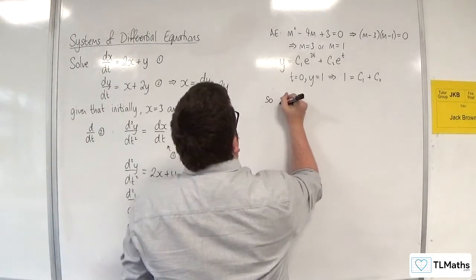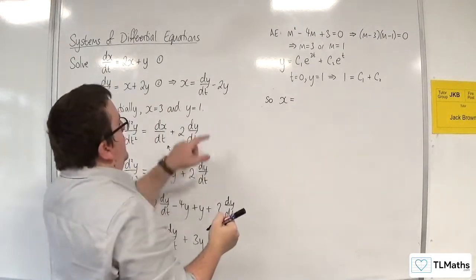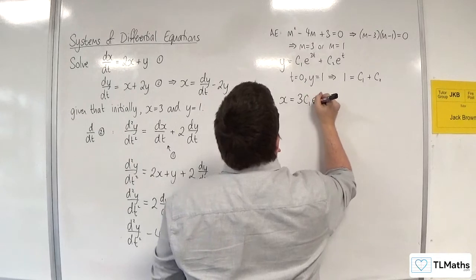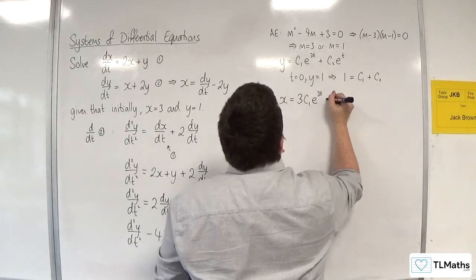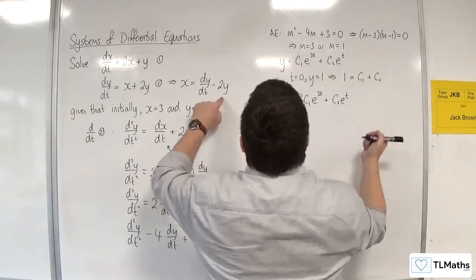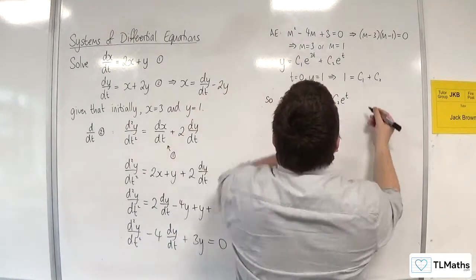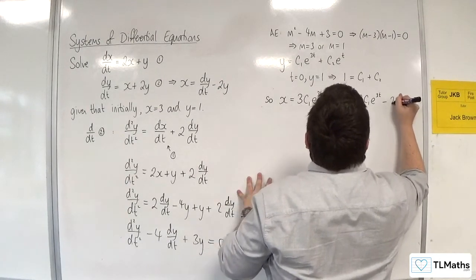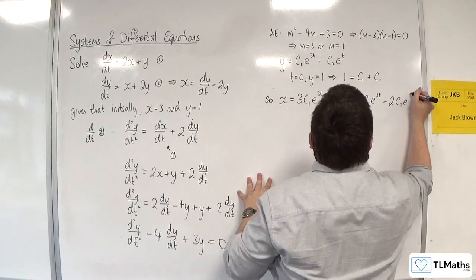So x is going to be equal to dy by dt, so the derivative of this, 3c1e to the 3t plus c2e to the t, take away 2 lots of y. So take away 2 lots of that, so take away 2c1e to the 3t, take away 2 lots of c2e to the t.